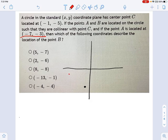So that's gonna be like right there or something. This isn't to scale. Which of the following coordinates describes the location of point B? So we have to use some of the information talked about in that last sentence, which is, A and B are located on the circle such that they are collinear with point C.